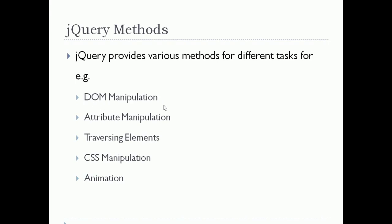jQuery provides various methods for different tasks. For example, DOM manipulation means you can create a new element, add an element, or remove that element. Then there is attribute manipulation, where you perform manipulation on the attribute of an element. Suppose you want to traverse your element — for example, assume there is a table tag and you want to traverse through it. There are also CSS manipulation methods.